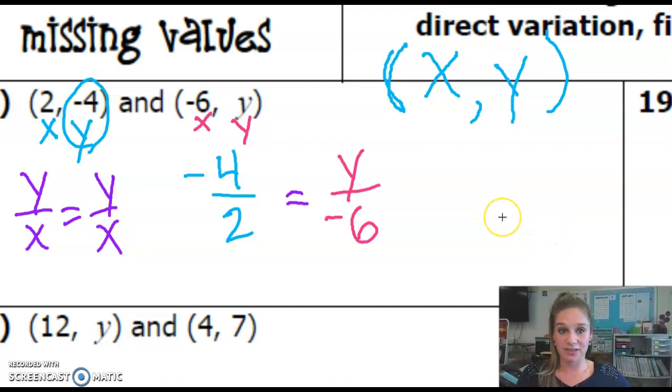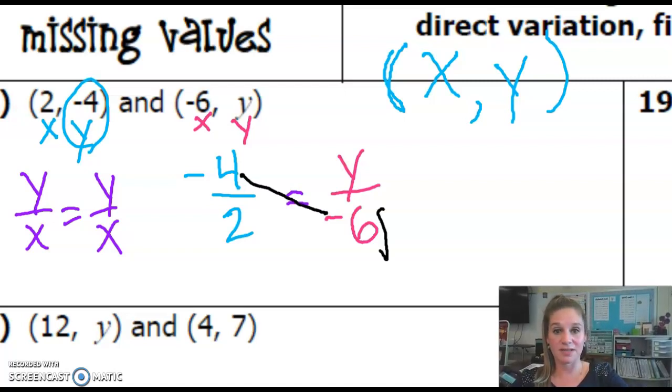So in order to solve this, let's go ahead and cross multiply, which you've definitely seen before. So I'm going to take negative 4 times negative 6, and a negative times a negative makes a positive 24.